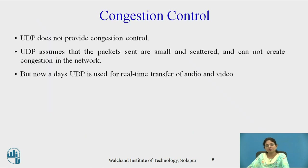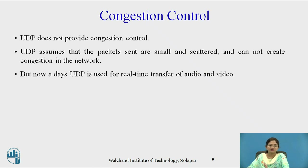The next service is congestion control. UDP does not provide congestion control. UDP assumes that the packets sent are small and scattered, so they do not create congestion in the network. Nowadays, UDP is used for real-time transfer of audio and video. These are some services provided by UDP and some services not provided by UDP.